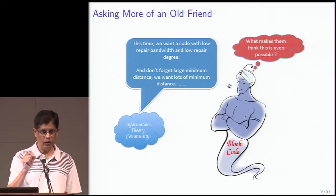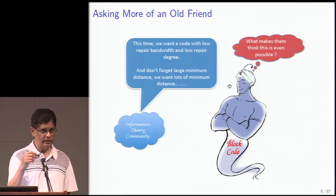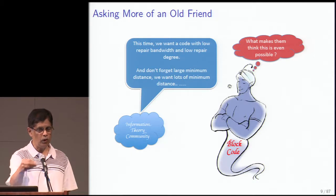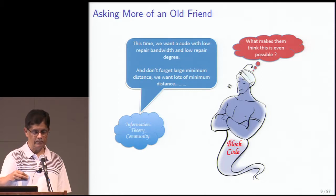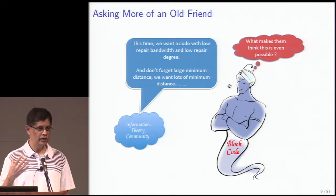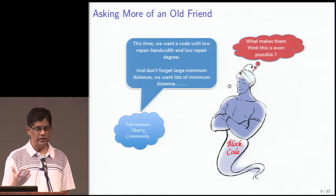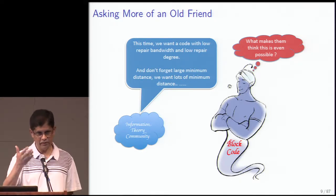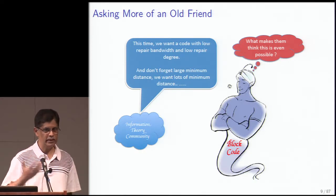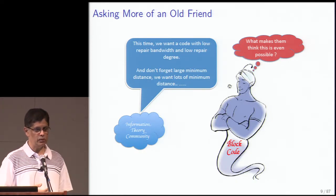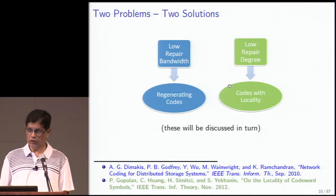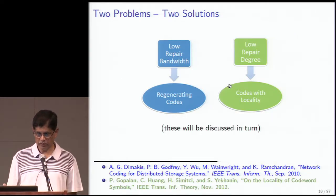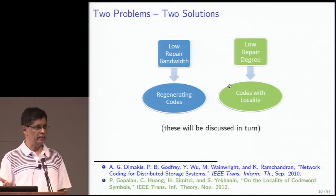The phrase 'more' is justified because along the way there will turn up codes which do all that MDS codes do and more — they don't give up on minimum distance in order to give you something extra. I did not foresee that, and I think it's the brilliance of the Berkeley team to think such a thing was possible. So there are two problems: codes with low repair bandwidth, and codes with low repair degree, and there are two solutions.